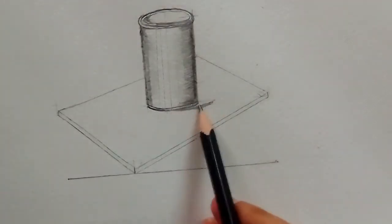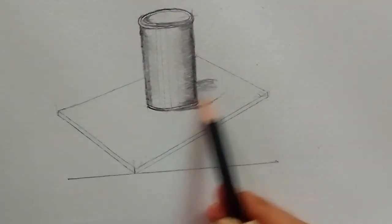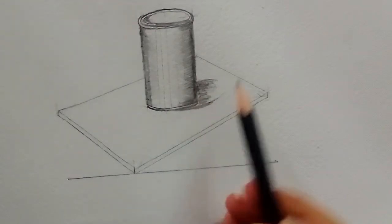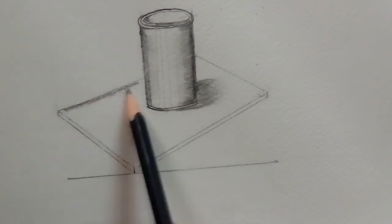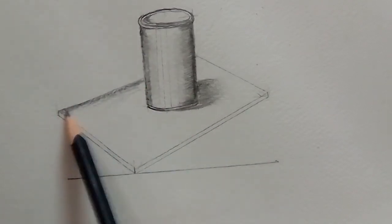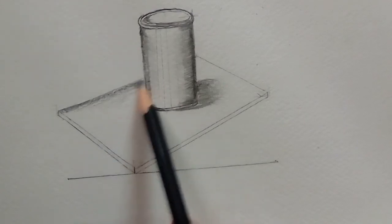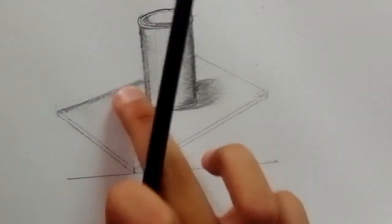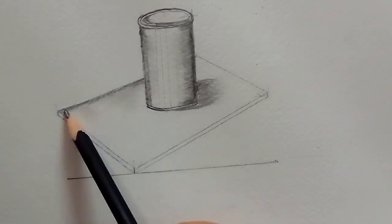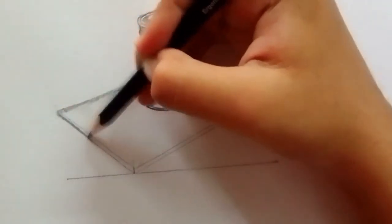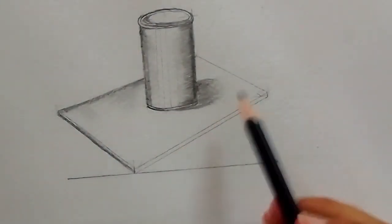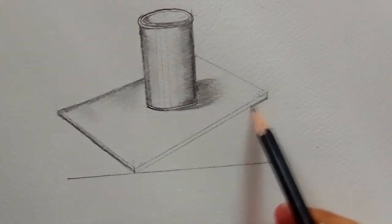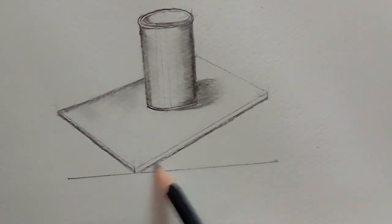Now draw the shadow of the tin. Blend it with the finger. Now draw the shadow of the bowl.